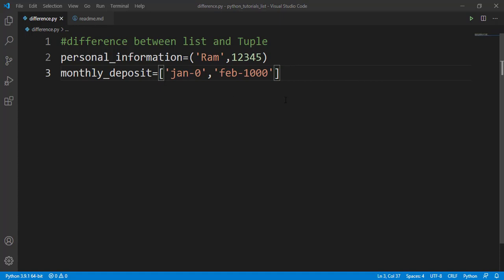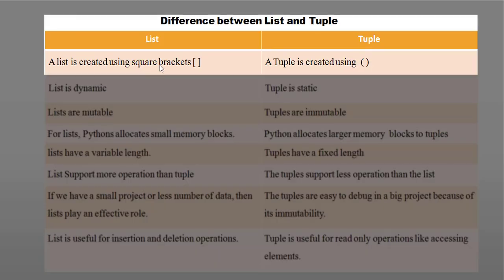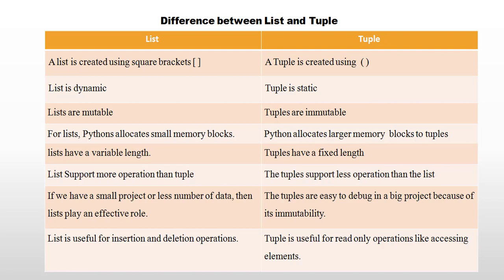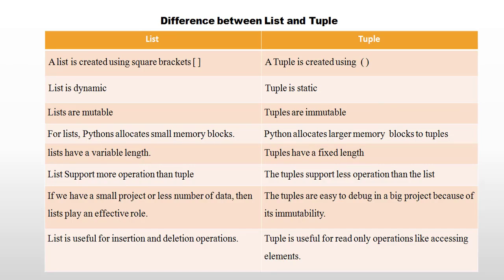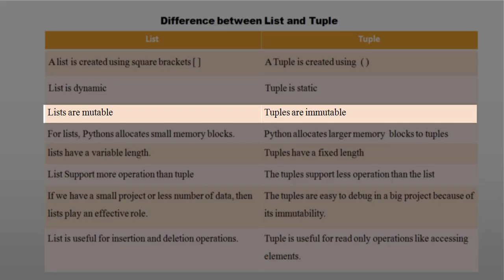We have created personal information as a tuple and monthly deposit as a list. The first difference is syntax: a list is created using square brackets and a tuple is created using parentheses. The second difference is that a list is dynamic and a tuple is static. Third, lists are mutable and tuples are immutable.